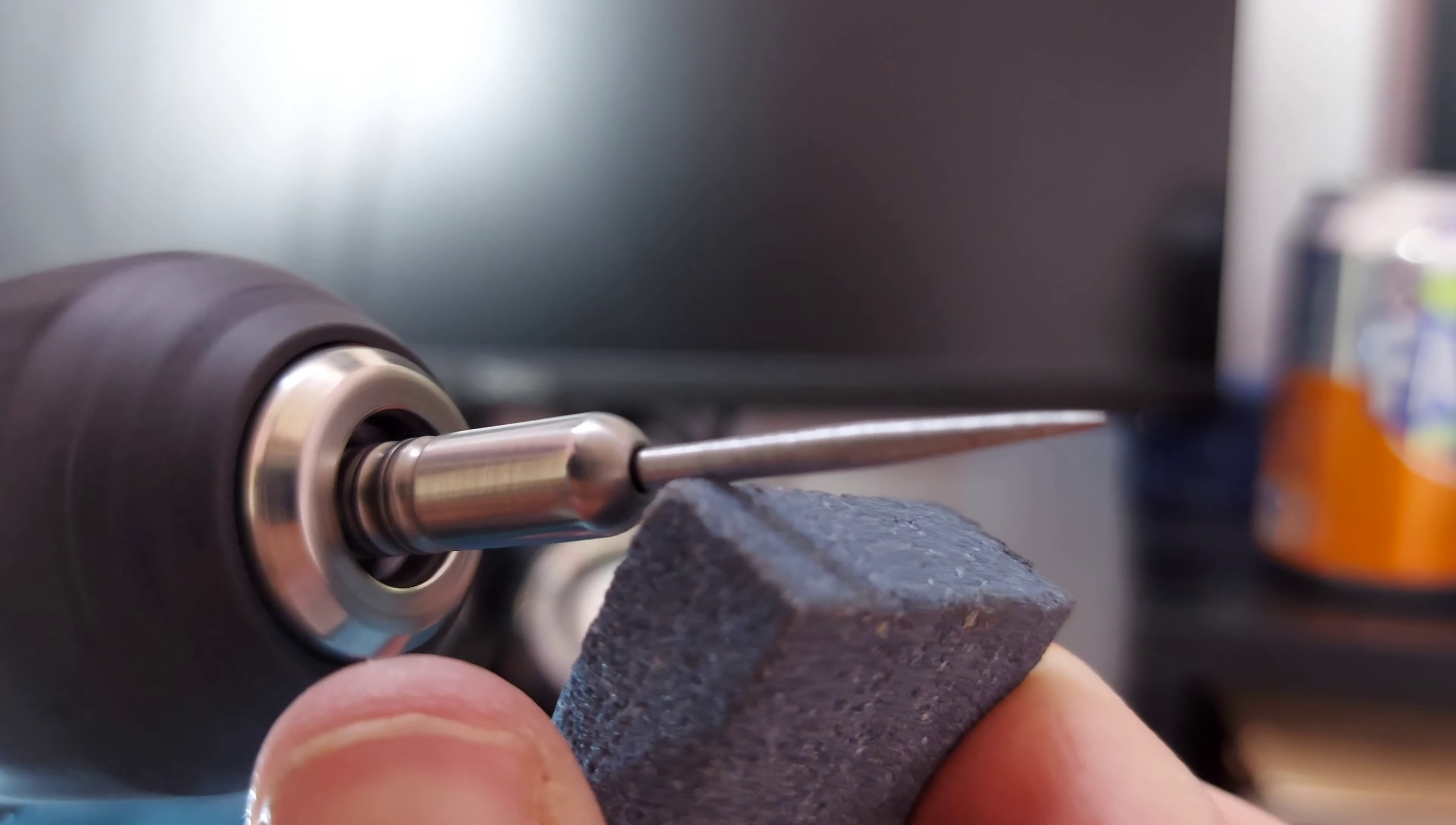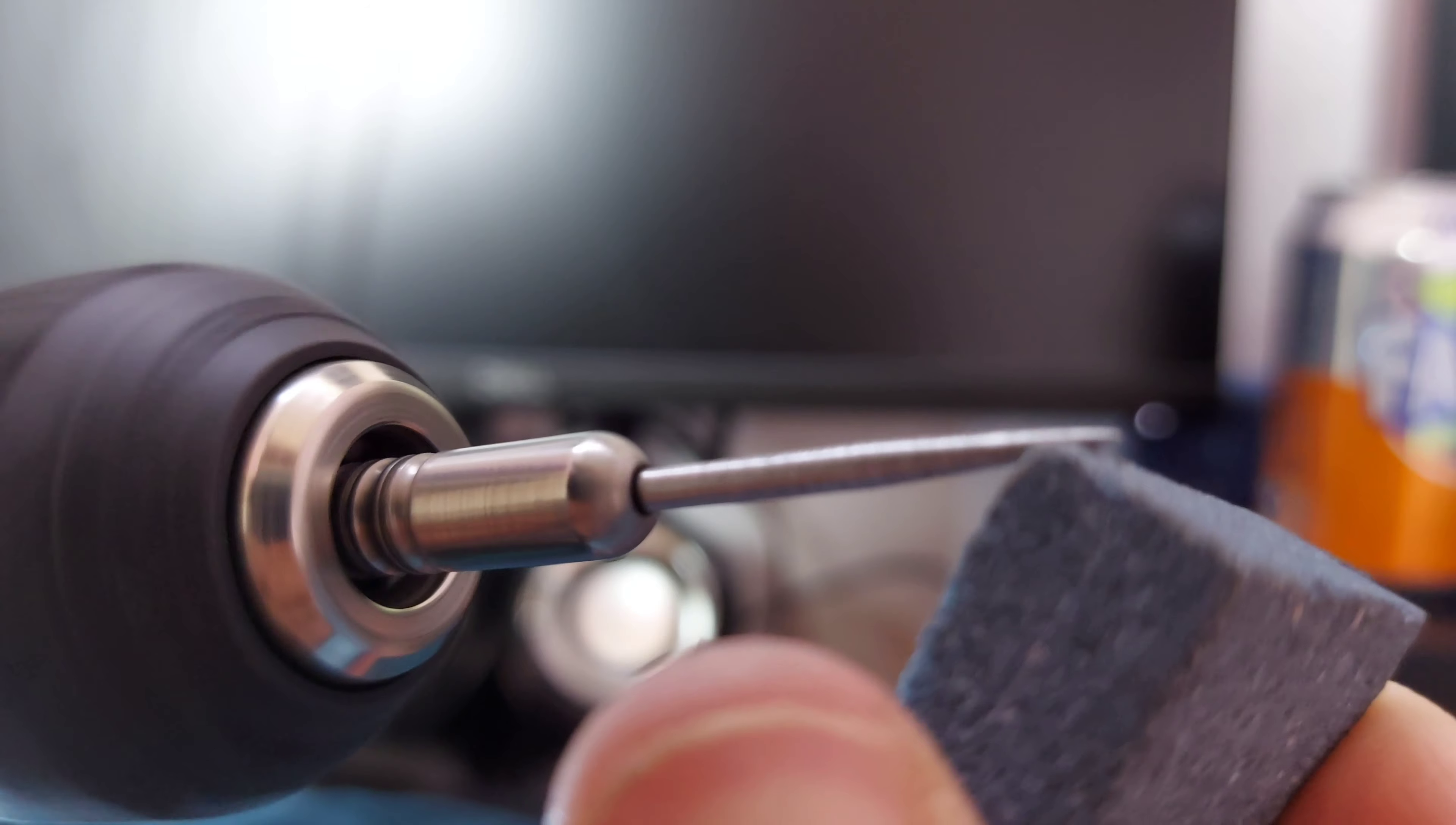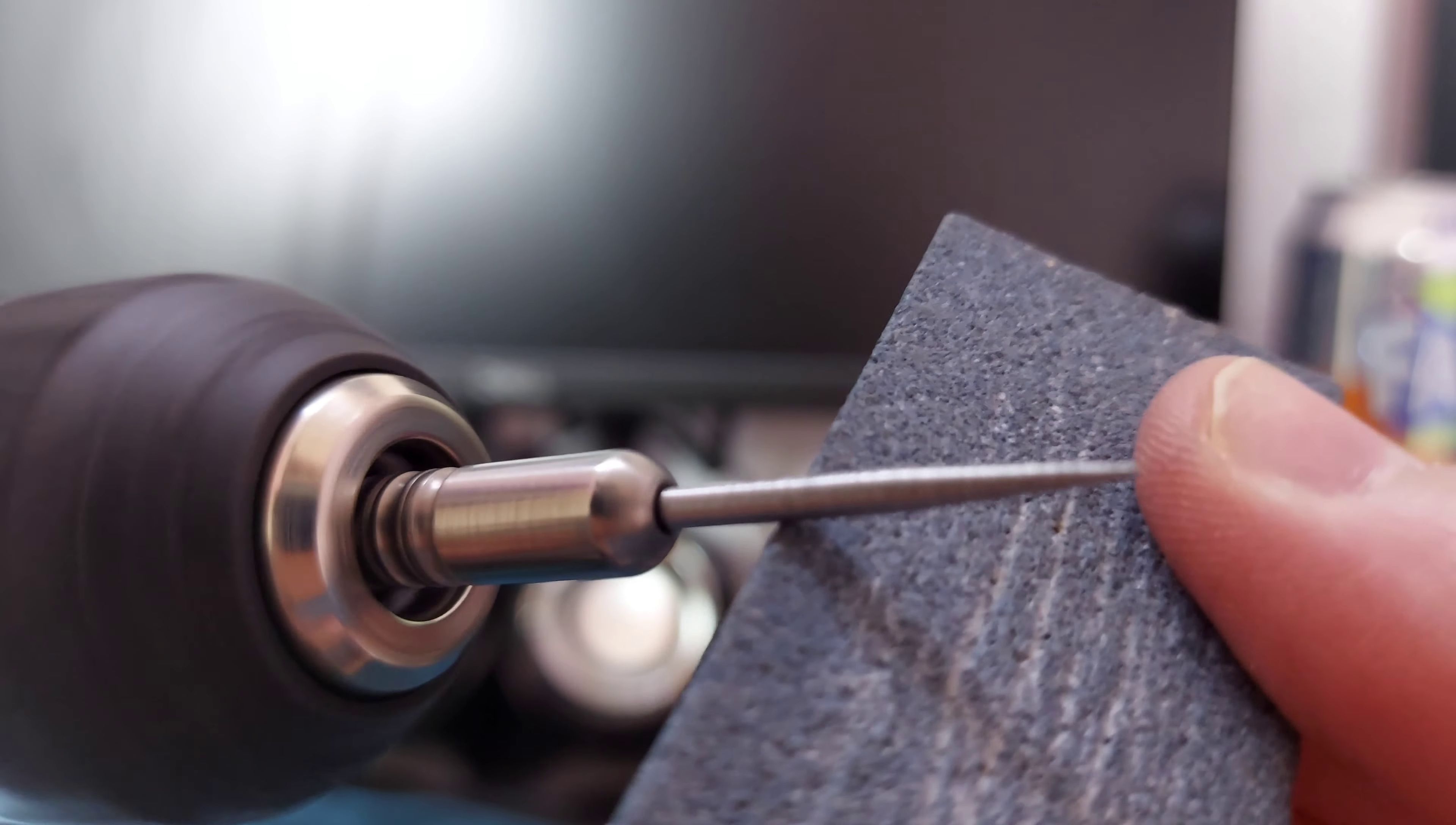You need to keep rotating the block and keep using different parts of the block, or whatever stone you're using, just to make sure you're not sanding it. You want to be cutting little marks, all different shapes, into the point.